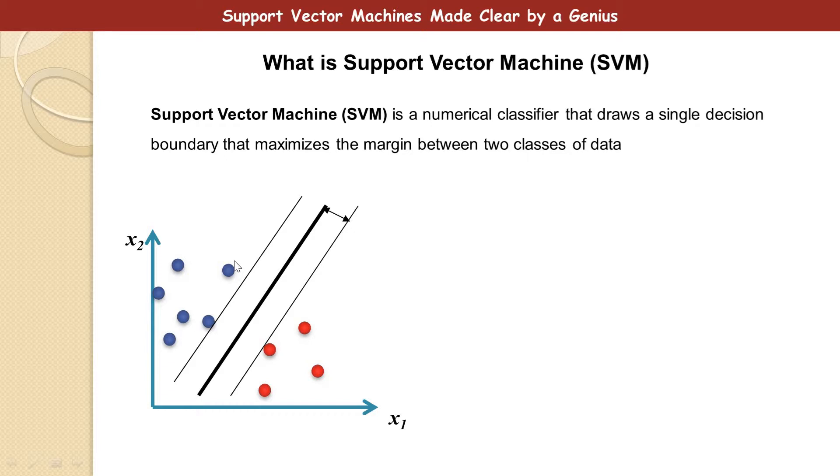So for us to get a line in between that maximizes the margin between the two sets of data, we need to know what lines actually help us to determine this midpoint. So to get the midpoint,